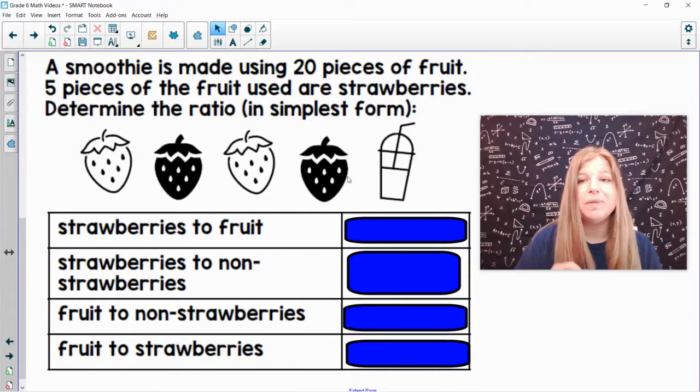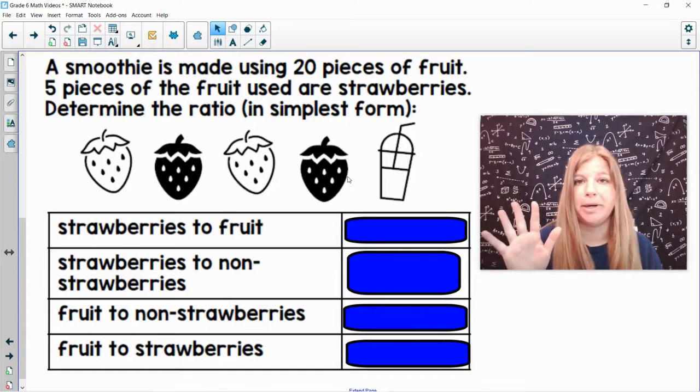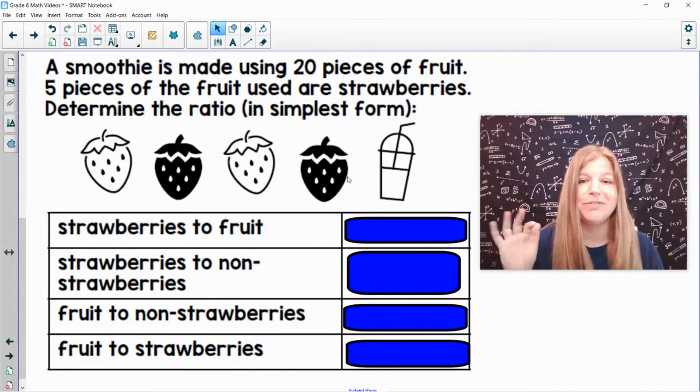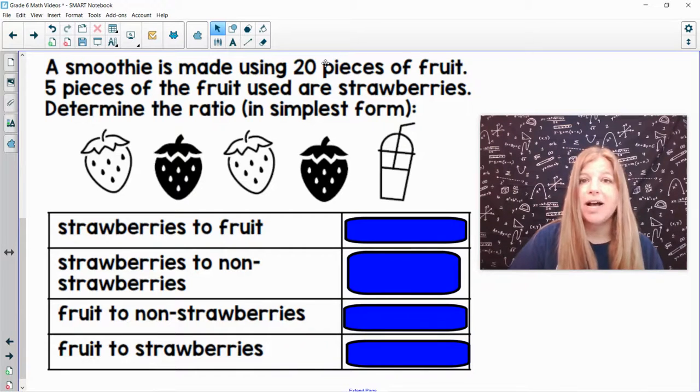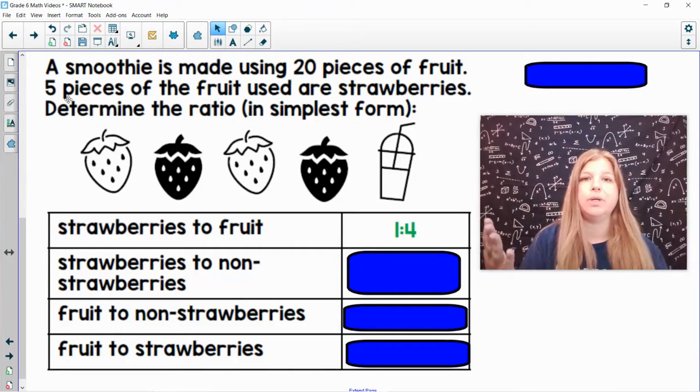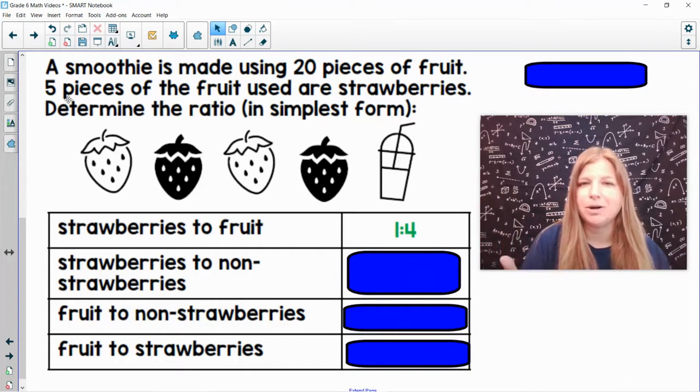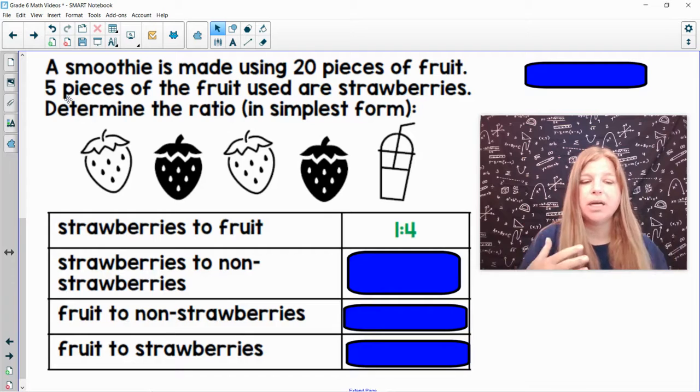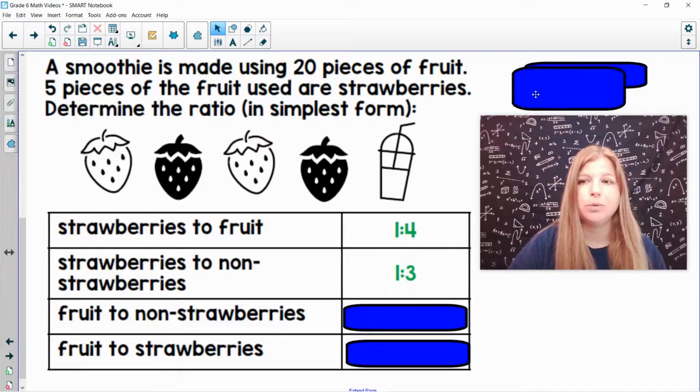A smoothie is made using 20 pieces of fruit. Five pieces of fruit are strawberries. Determine the ratio in simplest form. Strawberries to fruit. So how many strawberries are in this smoothie? Five. How many total pieces of fruit are there? Twenty. Five to twenty can get simplified by five, which then becomes one to four. Strawberries to non-strawberries. So there's five strawberries. Now there's 20 total pieces of fruit. So if five of them are strawberries, how many are non-strawberries? Twenty minus five is 15. So strawberries to non-strawberries would be five to 15. We used this ratio before. Five to 15 would simplify to one to three.